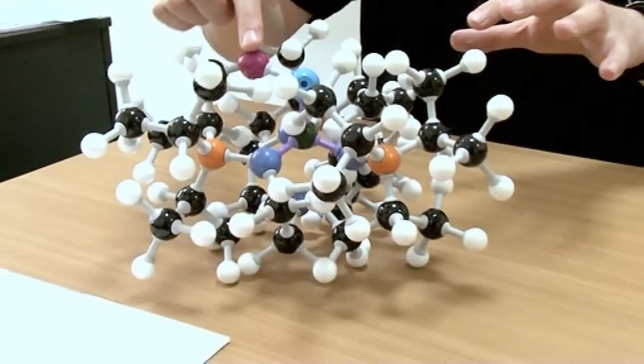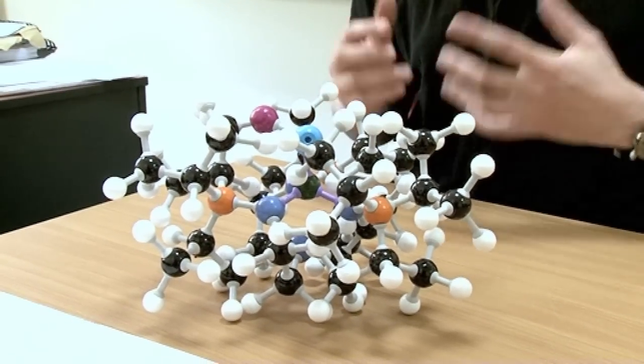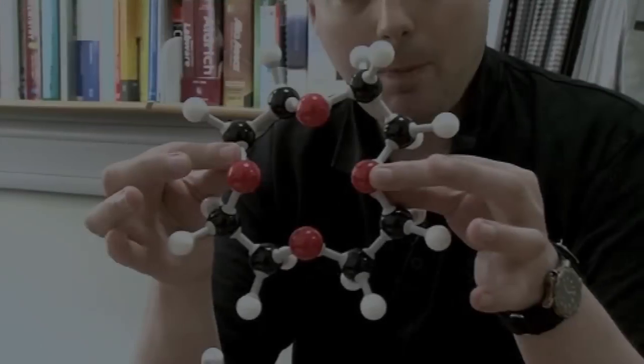But what we really wanted to do then was pull that sodium away because then we'd get this nitrogen with a terminal linkage to the uranium. And that's the thing that everybody had been chasing for decades. So the way we did that is with a molecule called crown ether.